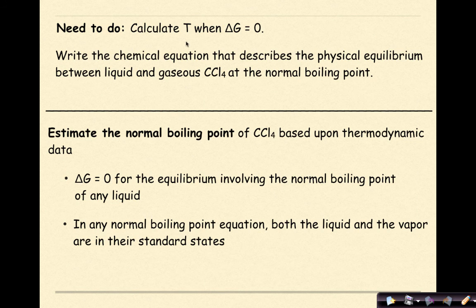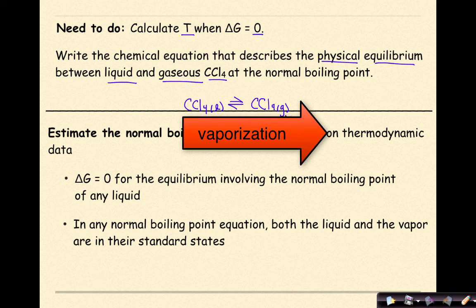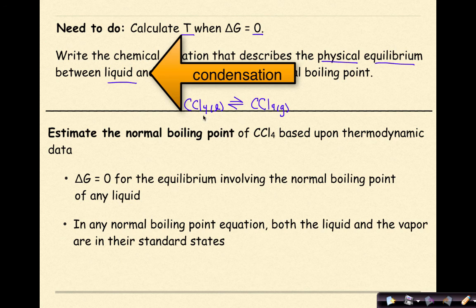So what do we need to do here? We're going to calculate temperature when delta G is equal to zero. We're going to start off by writing the chemical equation that describes the physical equilibrium between liquid and gaseous carbon tetrachloride at the normal boiling point. So we're going to write the formula for carbon tetrachloride, which is CCl4, as a liquid, and we're going to put a double arrow saying that it is reversible, and then we're going to write CCl4 again as a gas. This represents our physical equilibrium between transitioning from liquid to gas as it moves into becoming a vapor, and gas into a liquid as it condenses.